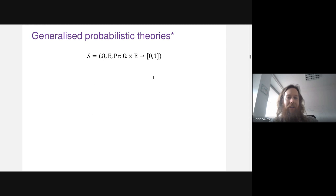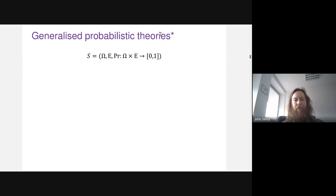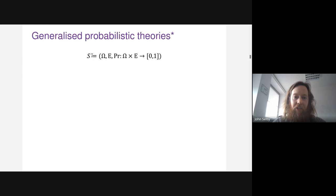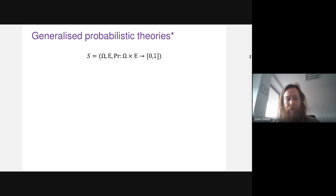Let's start by introducing the framework of generalized probabilistic theories (GPTs). This framework is designed to subsume both quantum and classical theory as special cases, but also allows us to reason about other hypothetical theories of nature, as well as sub-theories of quantum and classical theory. I'll introduce just the bit relevant for us: the states and the measurements. A GPT is defined as a triple — the state space omega, the space of effects or measurement outcomes epsilon, and a probability rule giving a probability in the unit interval for every state-effect pair.